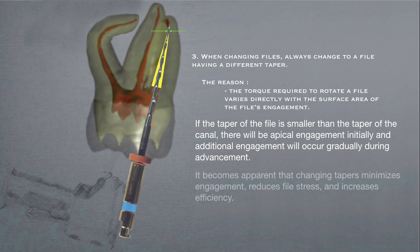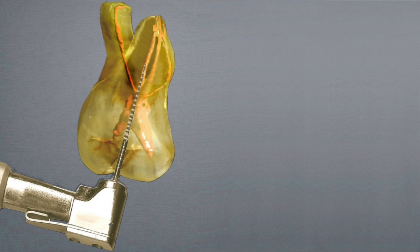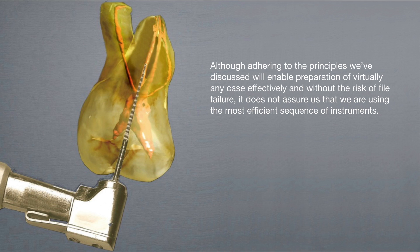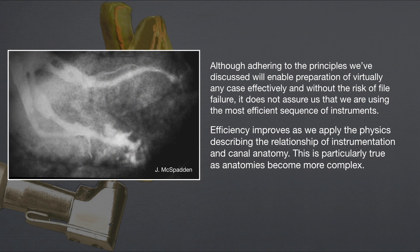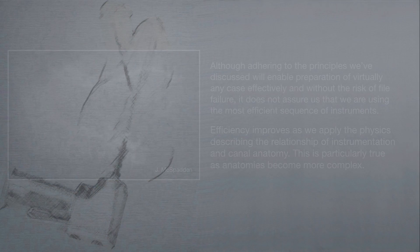It becomes apparent that changing tapers minimizes engagement, reduces file stress, and increases efficiency. Although adhering to the principles we've discussed will enable preparation of virtually any case effectively and without the risk of file failure, it does not assure us that we are using the most efficient sequence of instruments. Efficiency improves as we apply the physics describing the relationships of instrumentation and canal anatomy. This is particularly true as anatomies become more complex. So what are the physics for file anatomy relationships?